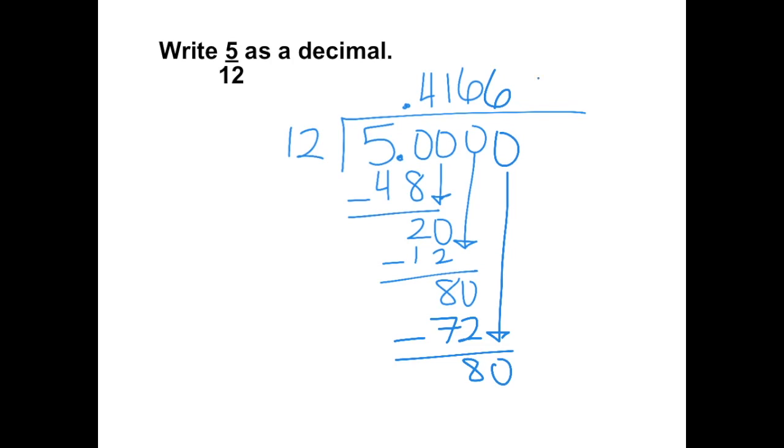So this equals zero point four one six, where only the six is repeating. So we only put the bar over the six.